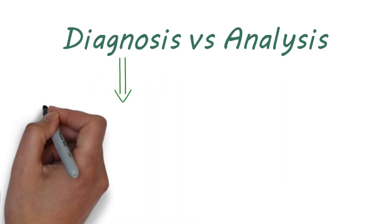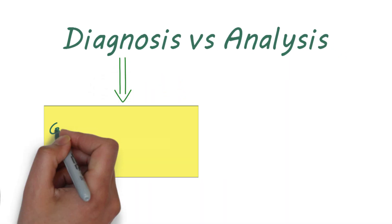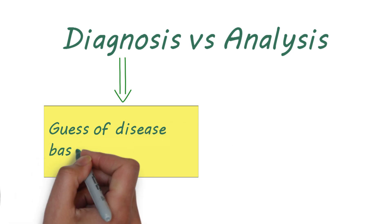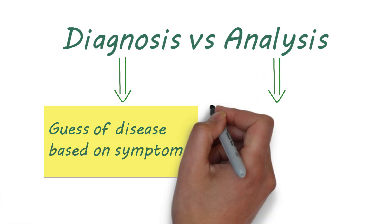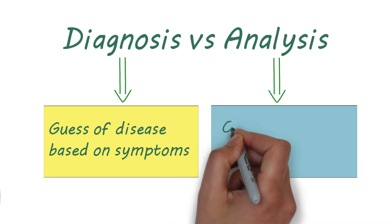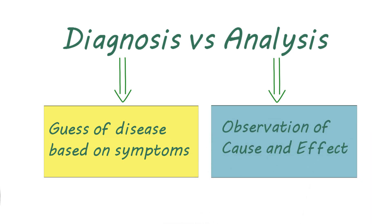Diagnosis is defined as the investigation or act of identifying a disease from its signs and symptoms. In contrast, analysis is defined as a detailed examination of anything complex in order to understand its nature or to determine its essential features.